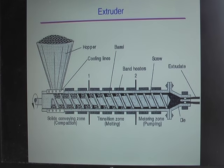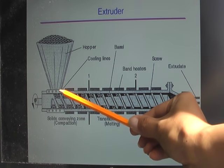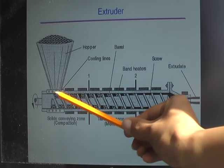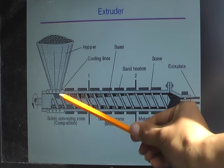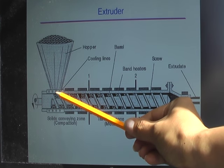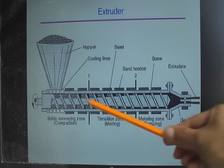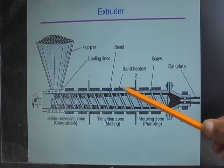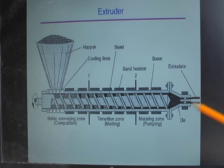The first thing we'll look at is the main components of the extruder. First, you need a hopper — this is where you load your plastics. Under the hopper you have cooling lines; we have cooling lines to prevent melting of pellets, otherwise the melted pellets will block the feeding zone. Then we have a barrel, which serves as an enclosure of the screw. On the barrel we have heaters and also a die.